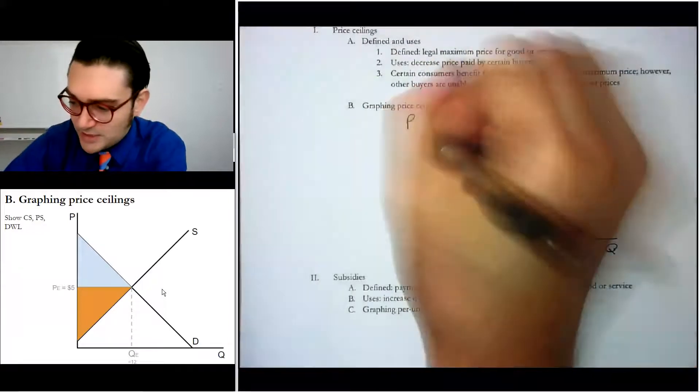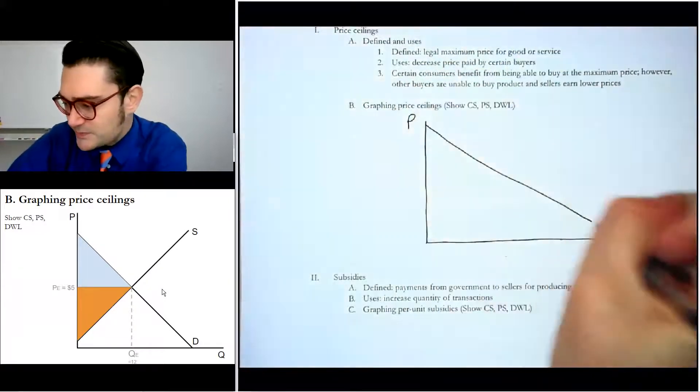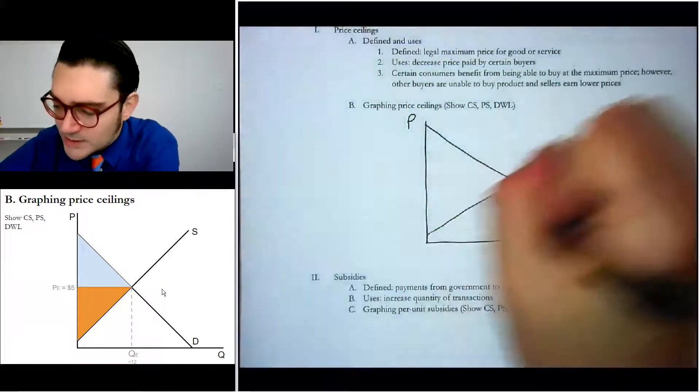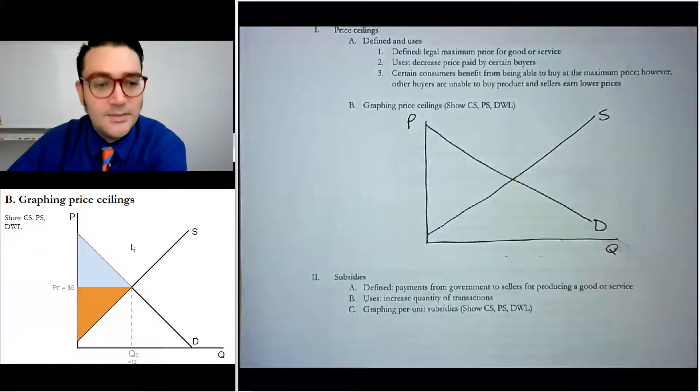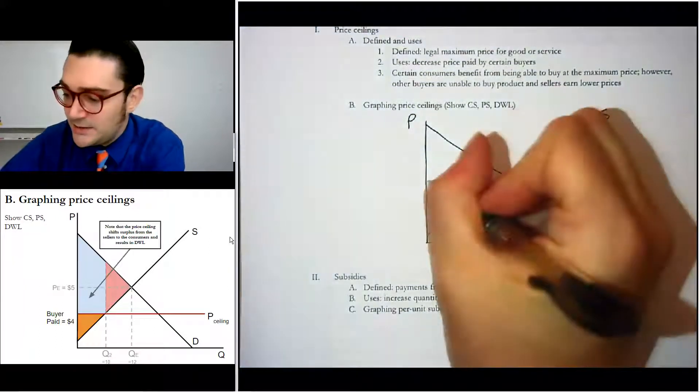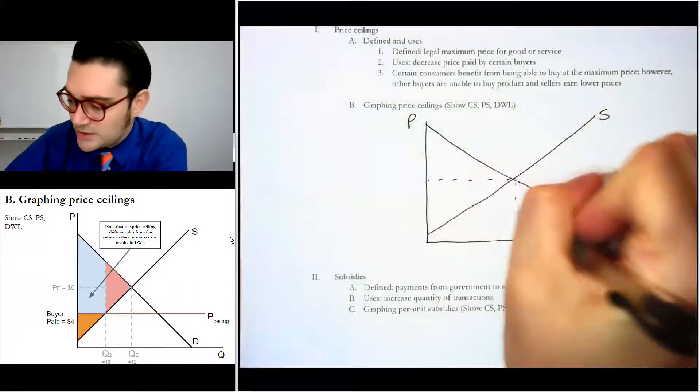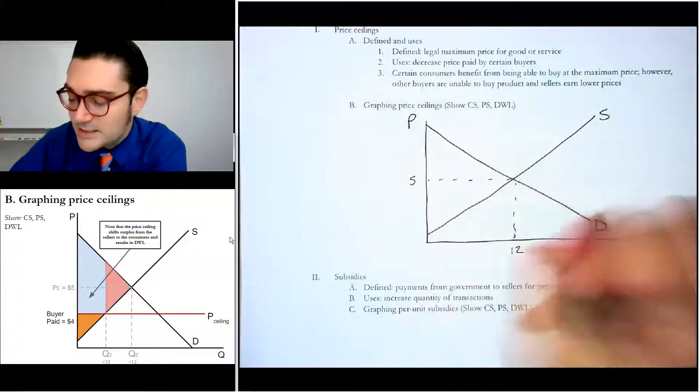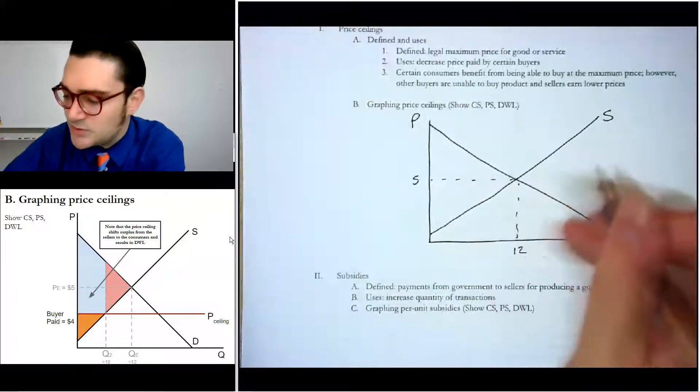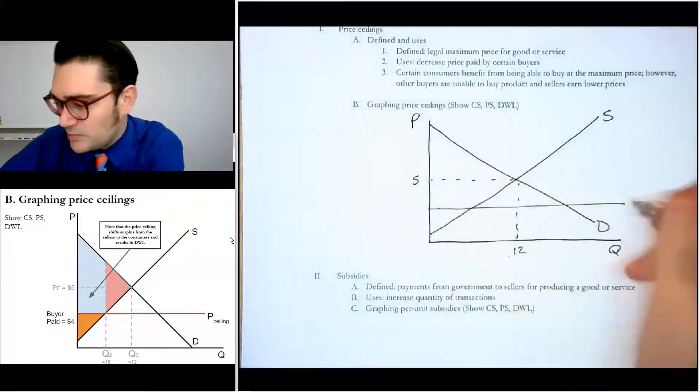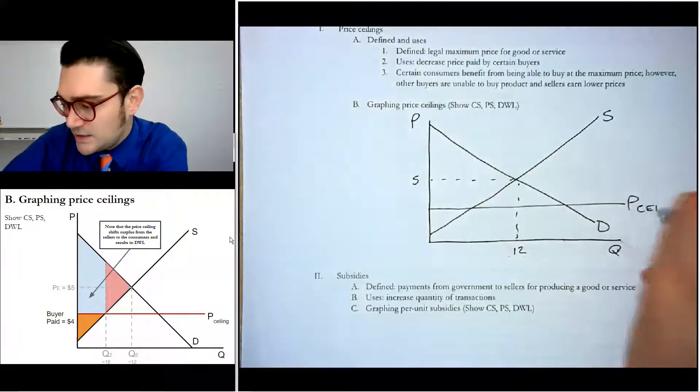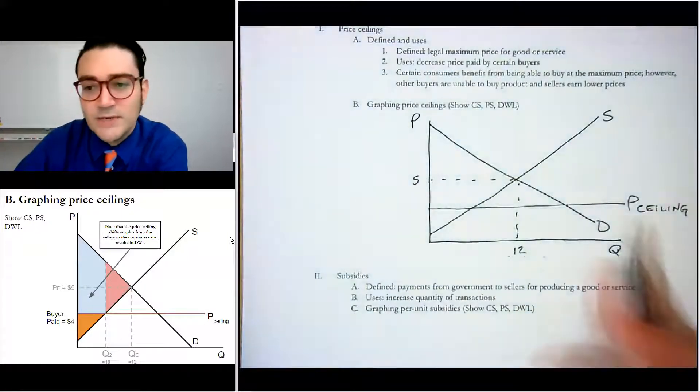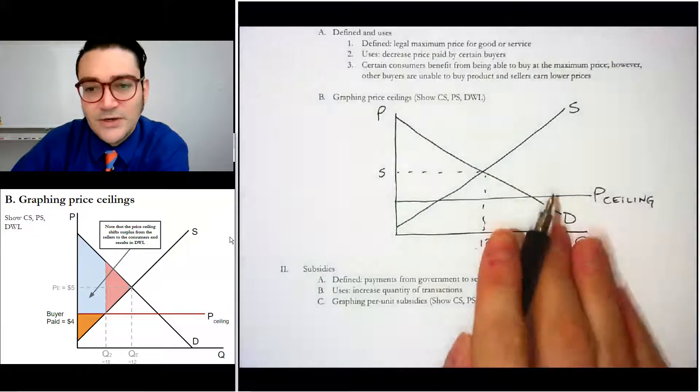Now, both of these price ceilings and subsidies are designed to help consumers typically as a result of these policies. So we're going to see, we'll just use the same numbers here. We've got 5 and 12. We're going to see that it ends up changing some of the surpluses in interesting ways. The price ceiling is down here. Now, I know some students are like, well, that's confusing. Why do they put the ceiling down here and the floor up there?